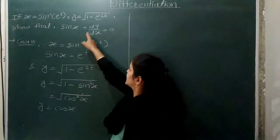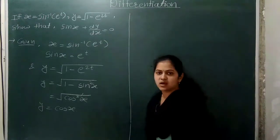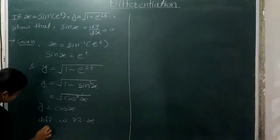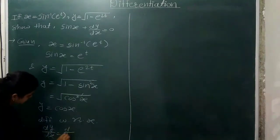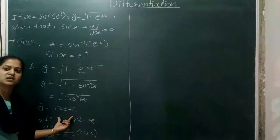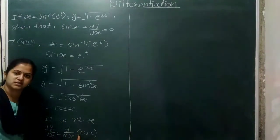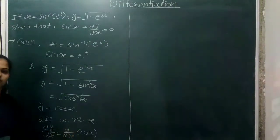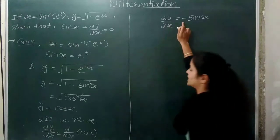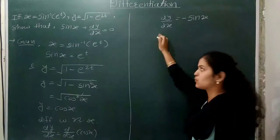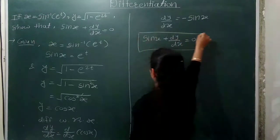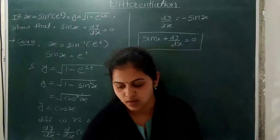We need to show sin x plus dy/dx equals 0. Now that we have y equals cos x, we differentiate with respect to x. d/dx of y is dy/dx, and d/dx of cos x is minus sin x. So dy/dx equals minus sin x. Bringing it to the left hand side: sin x plus dy/dx equals 0. This is proved.